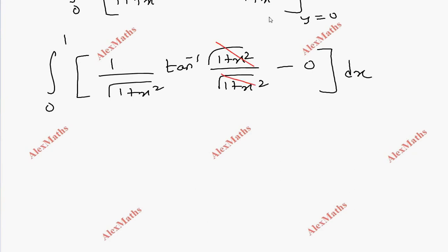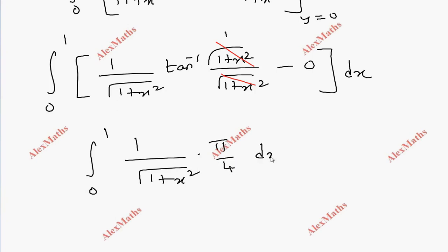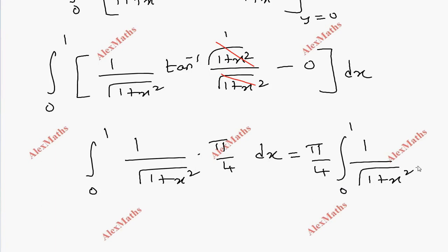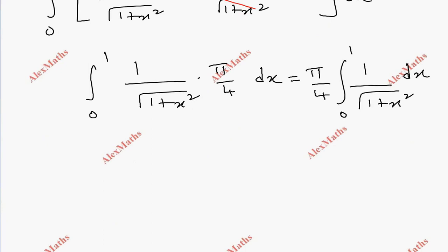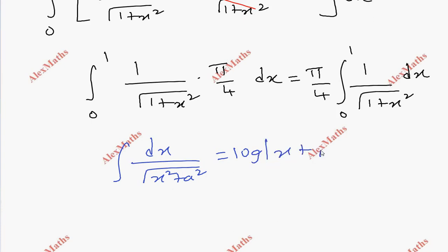After cancelling these two, we get tan inverse 1, and tan inverse 1 is pi by 4. So integral 0 to 1, 1 by root of 1 plus x squared, times tan inverse 1 which is pi by 4, dx. Now pi by 4 is constant, so it can be taken outside the integral sign. We are left with 1 by root of 1 plus x squared dx. This is again a direct formula: integral dx by root of x squared plus a squared equals log mod x plus root of x squared plus a squared mod plus c.